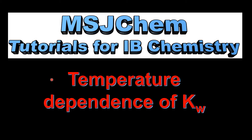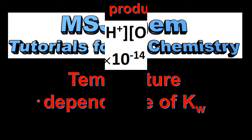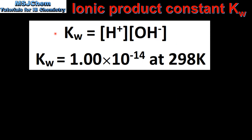This is MSJChem. In this video I'll be looking at the temperature dependence of Kw. Kw is the ionic product constant of water. It's equal to the concentration of the hydronium ion multiplied by the concentration of the hydroxide ion. Kw has a value of 1.00 times 10 to the negative 14 at 298 K.